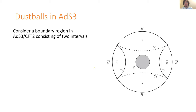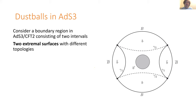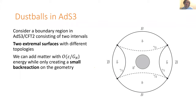We're going to consider a boundary region called big B consisting of two intervals in ADS3/CFT2 — a top interval and a bottom interval. This boundary region has two extremal surfaces. One is homotopic to big B and consists of surfaces gamma one; another homotopic to the complement consists of two other surfaces called gamma two. We also add a load of matter sitting in the middle of this anti-de Sitter space, with energy of order epsilon/G.